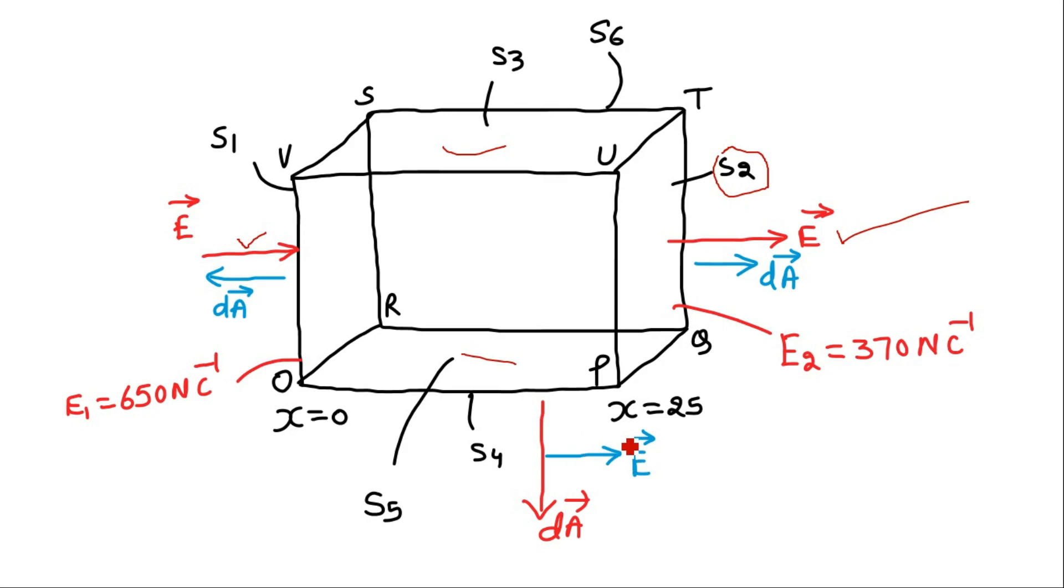Now the electric field everywhere is along plus x-axis. Therefore the angle between electric field and area vector is 90 degrees for the faces S4, S3, S5 and S6.